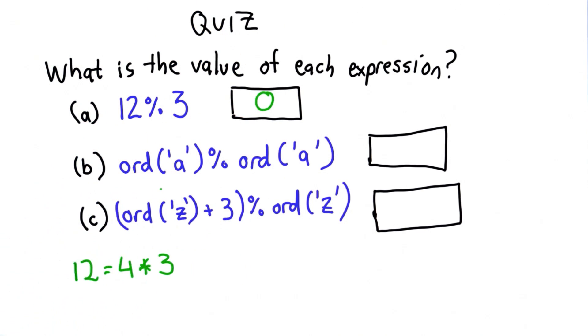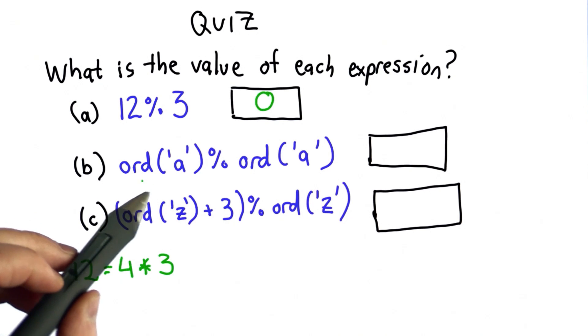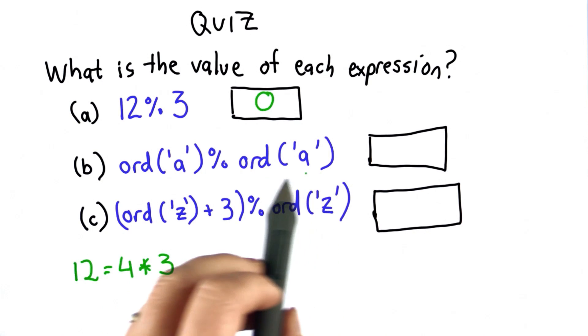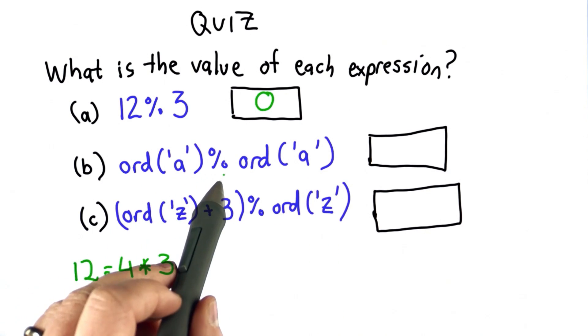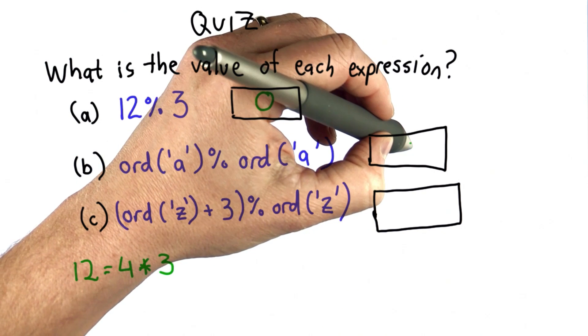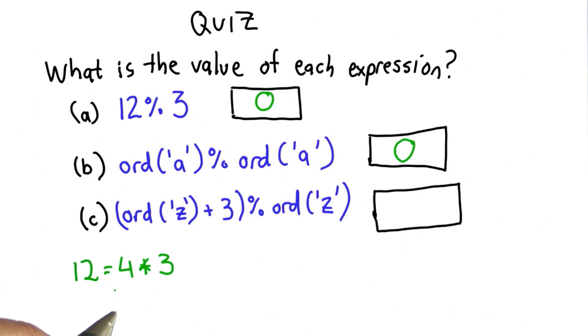For the second question, we could solve this by figuring out what ord of A is, but we don't actually need to. We know that the value of ord for A is always going to be the same every time we do it. So this is saying the same value modulo the same value. The result is always going to be 0 because anything is divisible by itself with no remainder. So the answer is also 0.